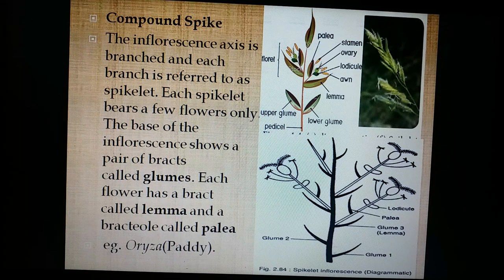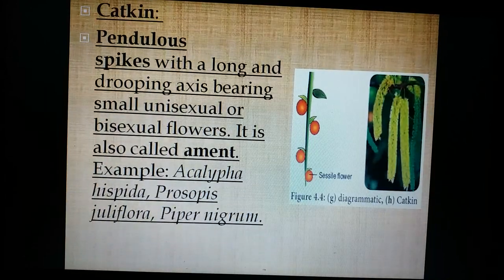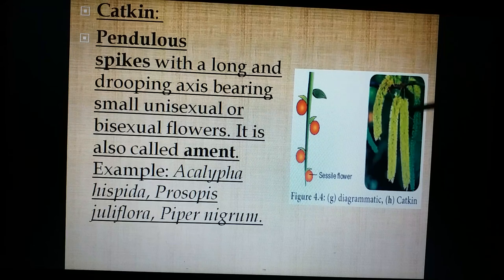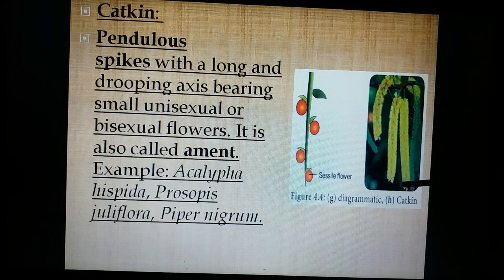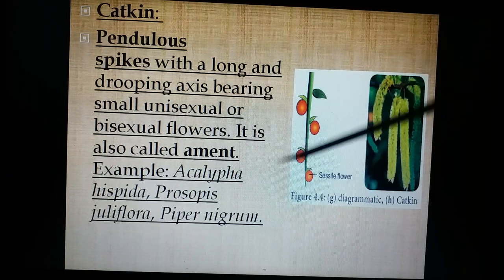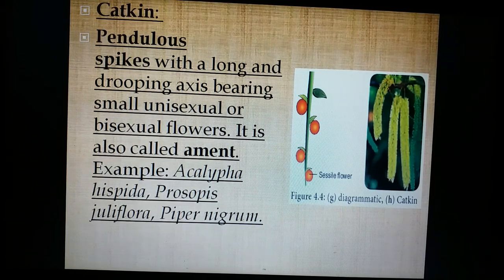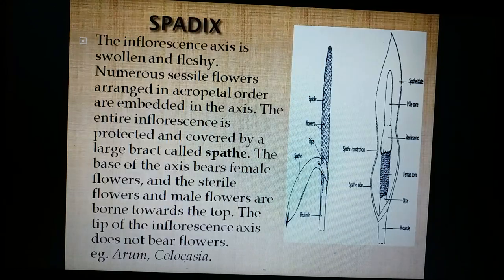This is catkin. Catkin is a drooping or pendulous inflorescence: on a drooping, weak, hanging axis, numerous sessile unisexual flowers are arranged in acropetal fashion. It is present in Amentiferous members, hence also called amentum. Examples include Acalypha, casuarina, Betula, and Morus.